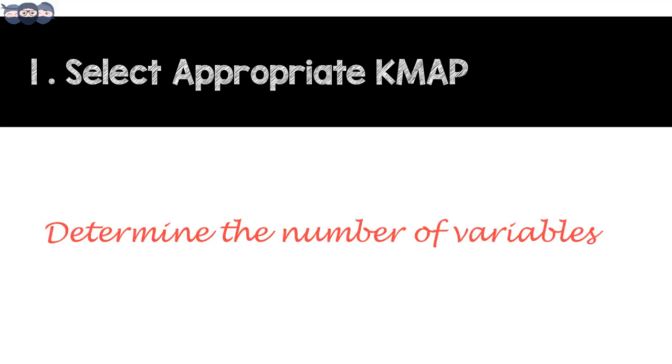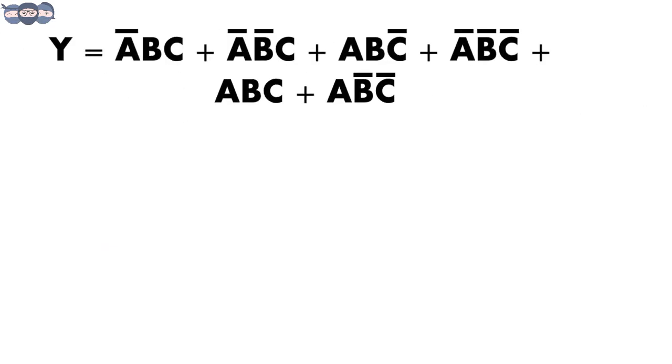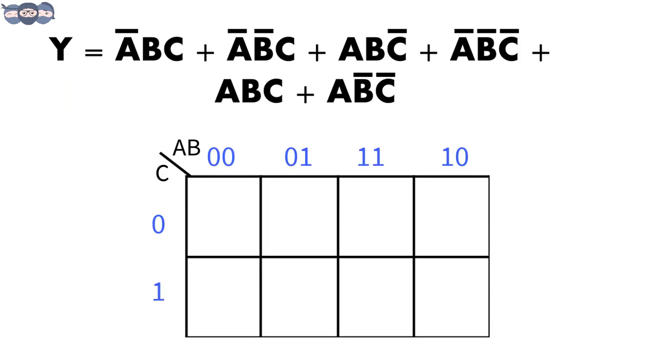Based on the Boolean expression, determine the number of variables present and select the respective kmap. If you see an expression like this, you can spot three terms here, A, B and C. In this case, we will use a three input kmap.